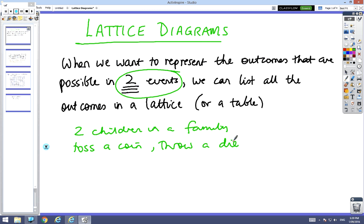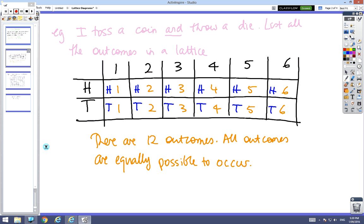Let's look at how it looks. Here's an example: I toss a coin, so I've got a head or a tail, and then I throw a die, so I got one, two, three, four, five, six. When these intersect, that's the outcome - head and one, head and two, head and three, tail and four, etc.